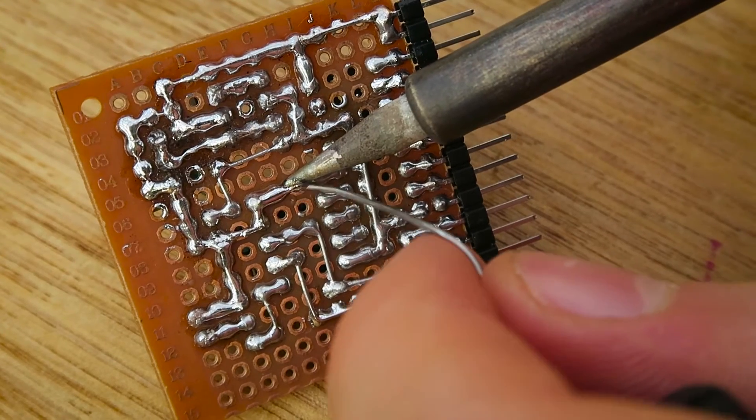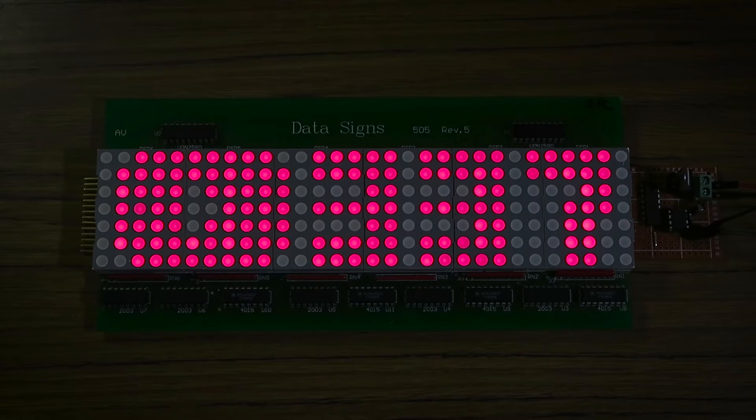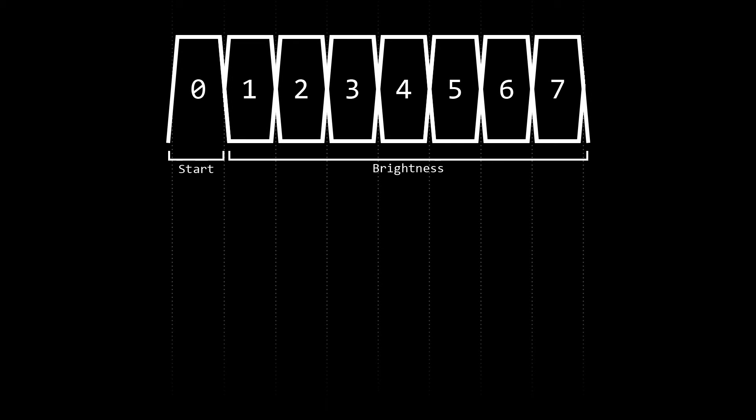After soldering the components to the board, it was time to work on the software. An image is rendered on the computer and sent to the display. The protocol is extremely simple. The first byte indicates the start of a transmission and contains brightness data.